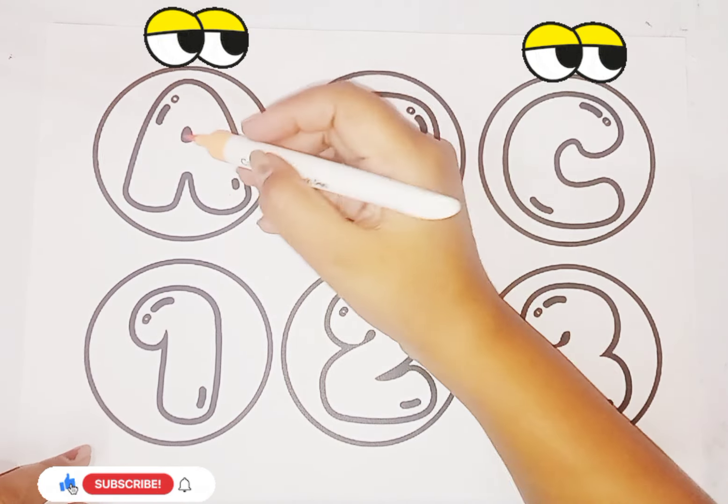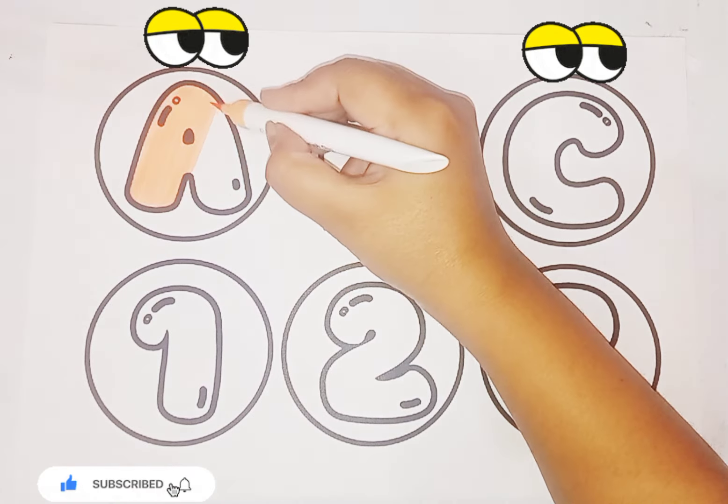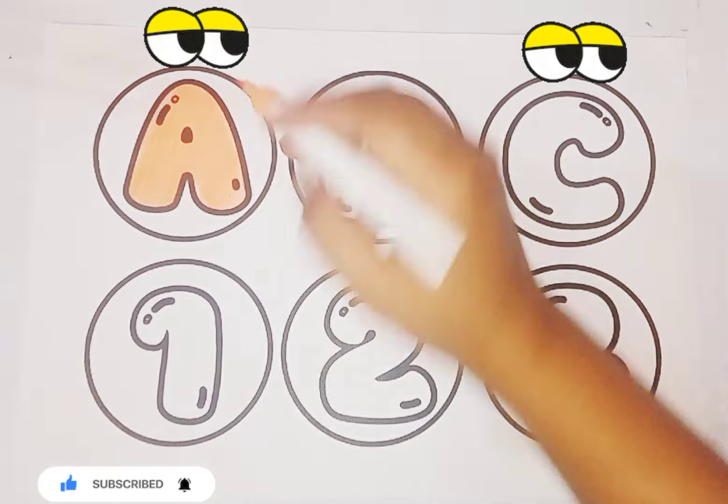Start with peach color. Alphabet A. A is for airplane. A is for aunt. Alphabet A.